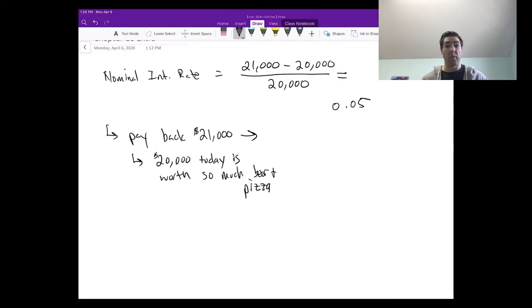When I got $20,000 today, that was worth a car. I could buy one car with that amount of money. Now in one year I owe $21,000, and what I really want to ask is, well, how much consumption then am I giving up in the future as a result of paying this loan? What I need to do is I need to take the $21,000 and adjust it for inflation.